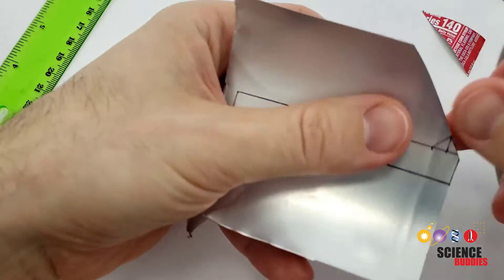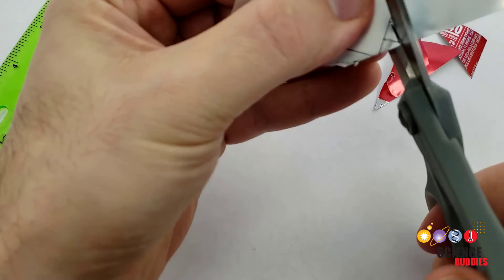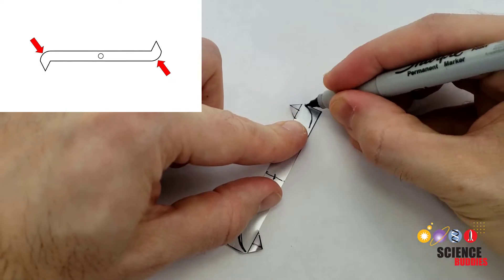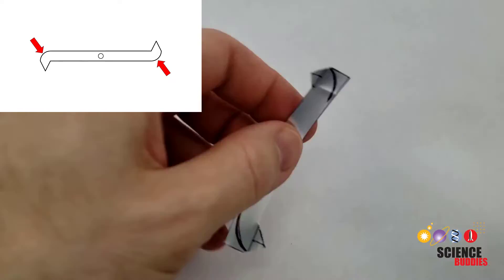Once you've drawn the outline, use scissors to carefully cut your rotor out. You'll also need to round off the back edges of your rotor blades. We'll explain why later.